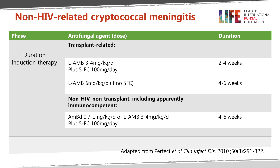Regarding induction treatment: the duration of induction in non-HIV-associated cryptococcal meningitis varies and is sometimes longer than the recommended two weeks for HIV-associated disease. In transplant patients who develop cryptococcal meningitis due to immunosuppression, liposomal amphotericin B is recommended because it is better tolerated in that group. The recommendation is liposomal amphotericin B plus flucytosine for two to four weeks. If liposomal amphotericin B is used alone, the recommendation is a higher dose of 6 mg/kg/day for four to six weeks.